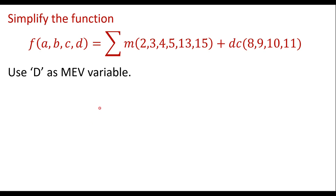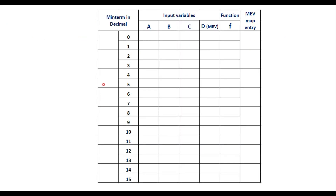To solve this, first draw a table with columns for the minterm decimal number, input variables A, B, C, D, the function F, and the MEV map entry. Since we have 4 variables, there are 16 possible values. We list all possible input combinations from 0 to 15.